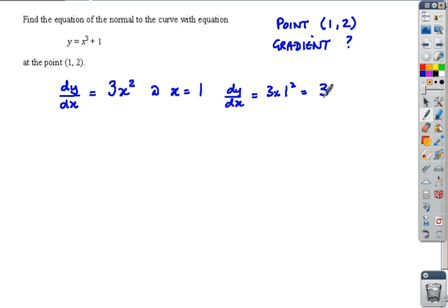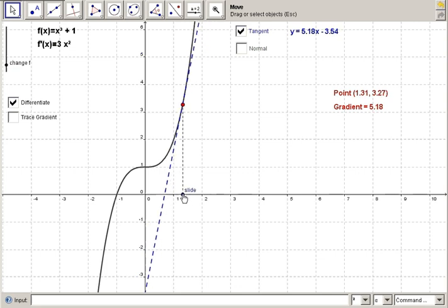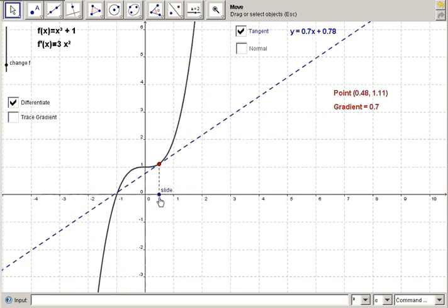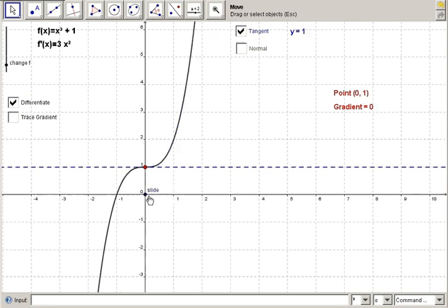Here's a picture of x³ + 1. You can see in blue the tangent line at point (1, 2) with gradient 3. If we differentiate the curve we get 3x². As we move along the curve, the tangent line takes the slope at any point, and at that point we have gradient 3.